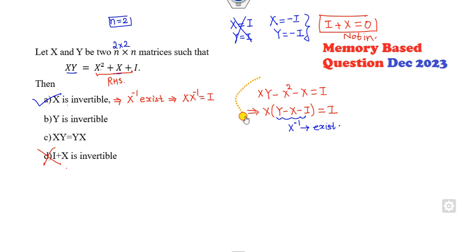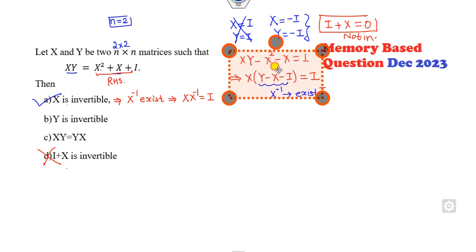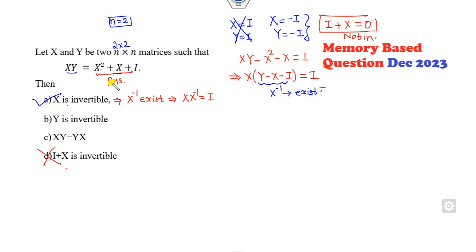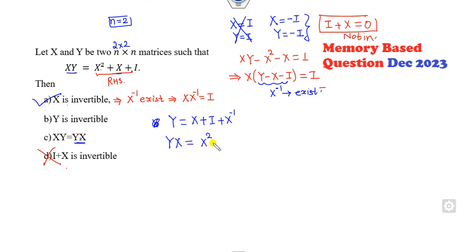Since X inverse exists, I can multiply through by X inverse to get Y·X + I + X inverse. Then multiplying by X gives Y·X·Y = X² + X + I, which is nothing but X·Y. So this option is also a correct option.